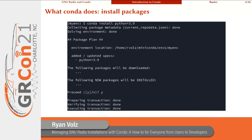Another thing you can do with the conda command is install packages. From within an environment, you can type `conda install` and then the name of the package — in this case, Python — and we're specifying that we want version 3.9. It'll present a plan for which packages it wants to download and install, and if you approve, it will install those into your environment.